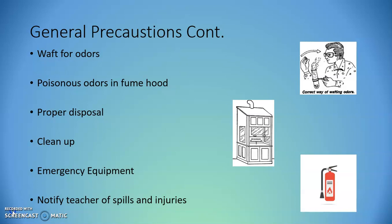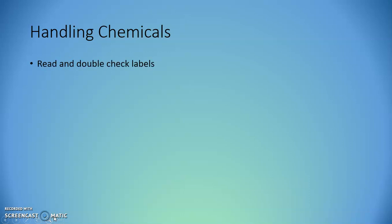Next, we're going to take a look at proper handling of chemicals. First of all, make sure that when you're using a chemical, it is the chemical that you want to be using. Read and double-check the labels, especially if in your procedure it has the name of a chemical and then on the bottle it has a formula. Make sure that it is what you are actually supposed to be using.